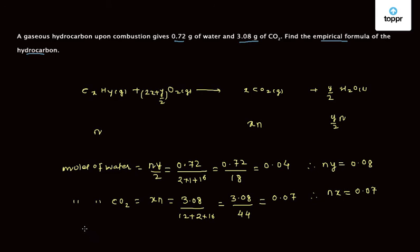We divide NX by NY, which equals 0.07 upon 0.08, which is 7 upon 8. So we have X upon Y is equal to 7 upon 8.